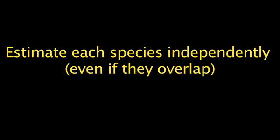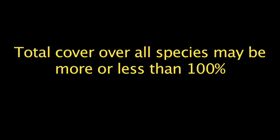Estimate the cover for each species in a quadrat independently of the other species, even if the species overlap. In some cases, this may result in a total cover value for the quadrat over all species of more than 100%. And, if there is some bare ground, total cover may be less than 100%.